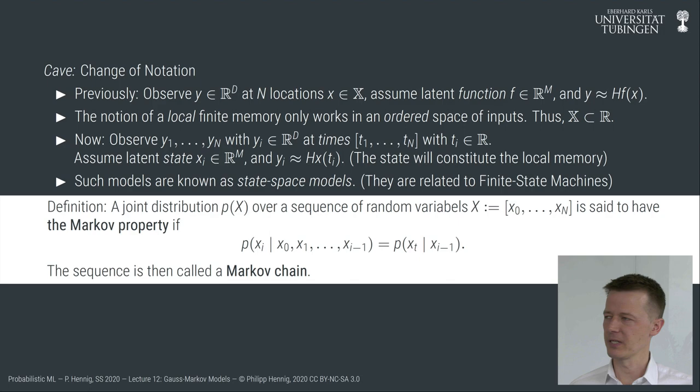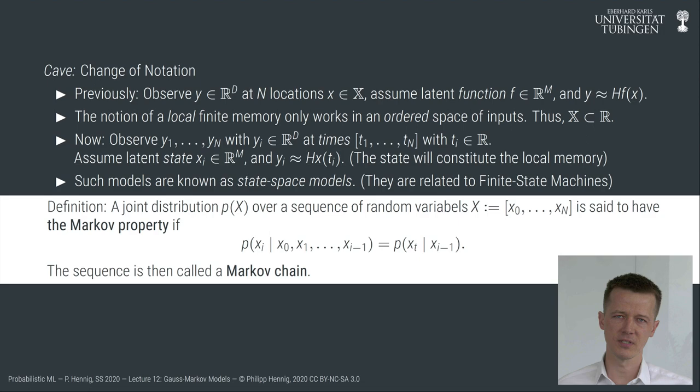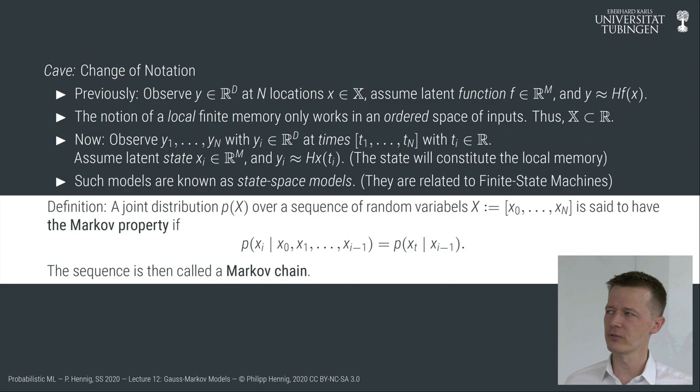I already introduced Markov chains in lecture 3 or 4 when we spoke about sampling algorithms and Markov chain Monte Carlo. Here is a reminder of the definition: a joint distribution over latent states is said to have the Markov property if the conditional distribution of the i-th state given all the others can be written as the i-th state given only the immediate predecessor.